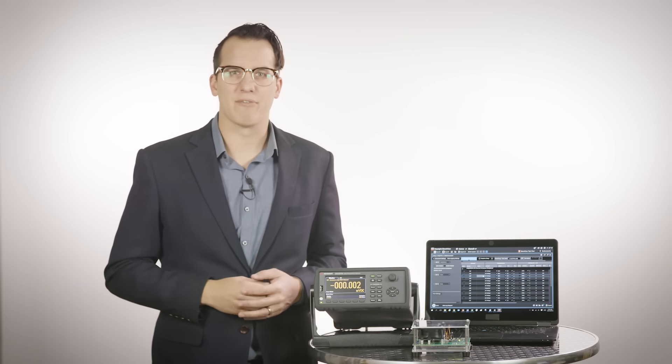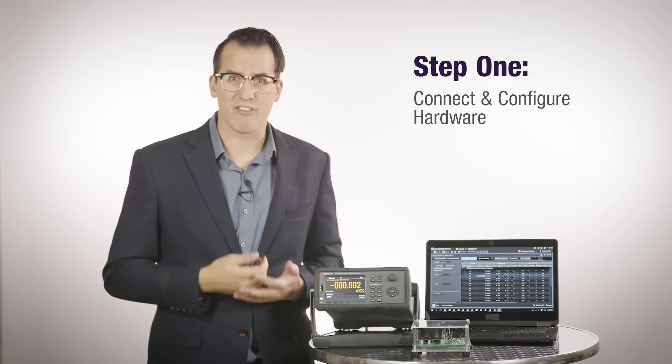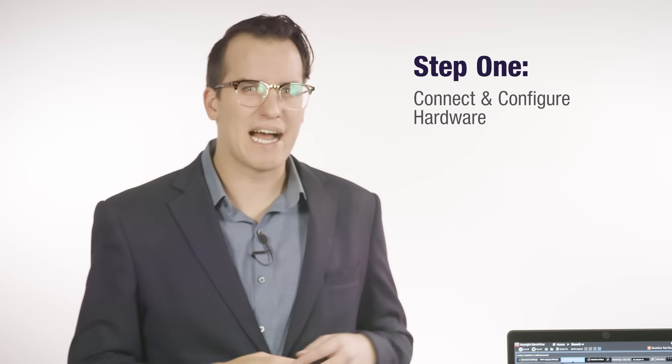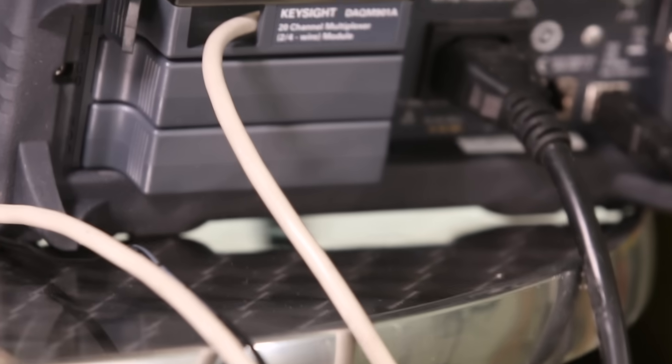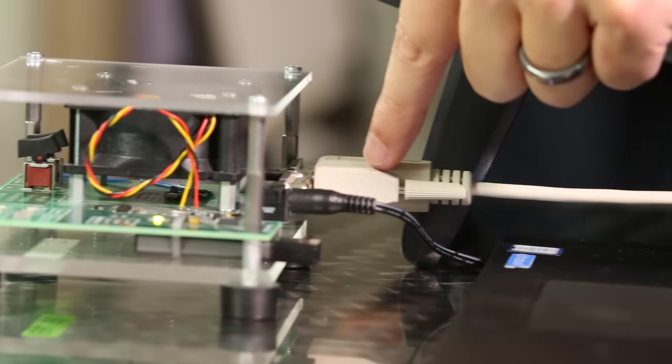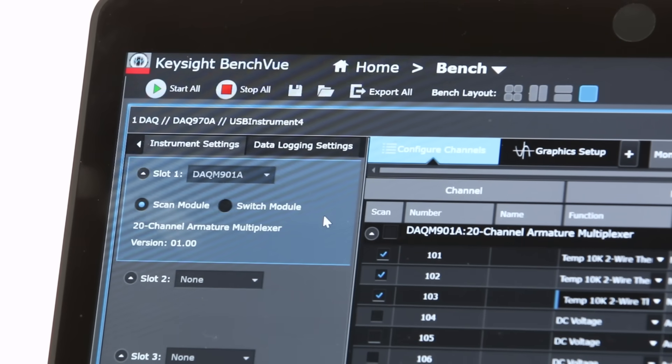So there are three main steps to making a temperature measurement. First we need to connect and configure our setup. In this case we're gonna use the DACM901A module's channels 101, 102, and 103 which are wired to the temperature cube's thermistors T1, T2, and T3. Then we're gonna open BenchVue and make sure we're connected and ready to configure our DAC. With a modern DAC you can set up, collect, and analyze data in a single piece of software.